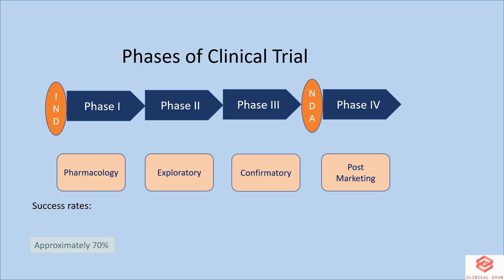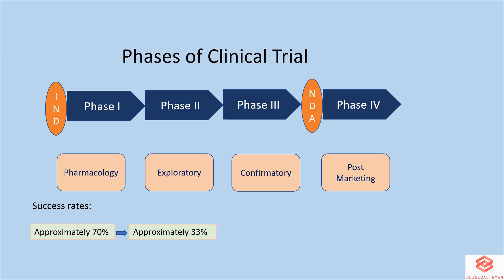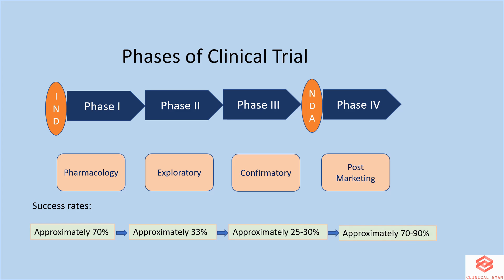Success rates: approximately 70% of drugs from phase 1 move to phase 2, 33% move to phase 3, and about 25 to 30% move to phase 4. In phase 4, about 70 to 90% of drugs successfully stay in the market, and the rest could be recalled from the market if safety is at risk.